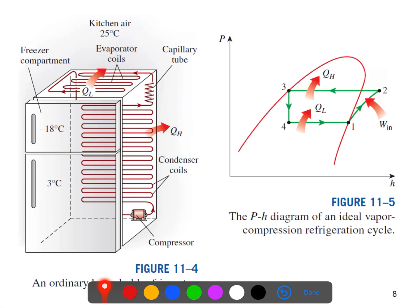The coil behind the refrigerator is where heat is dissipated to the kitchen. The kitchen air temperature is 25 degrees centigrade, and the freezer temperature is negative 18 degrees. The compressor is here, the condenser coil is here, labeled QH, and this is the capillary tube.